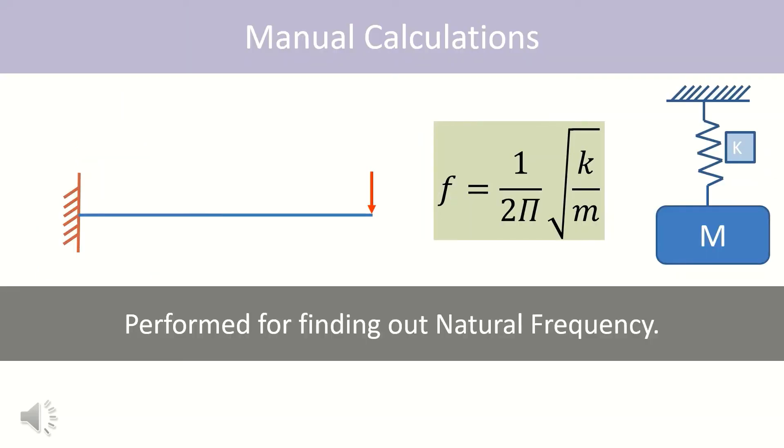Firstly, I have performed manual calculations and then created the same model in SAP 2000 for verification. For manual calculation, I calculated deflection at tip of the cantilever and based on that, stiffness is calculated for displacement in vertical direction. So now I can calculate natural frequency of the cantilever beam for displacement in vertical direction.